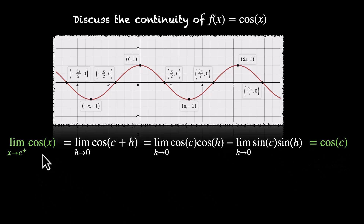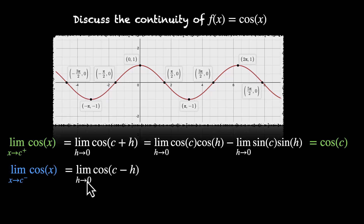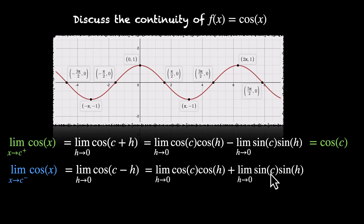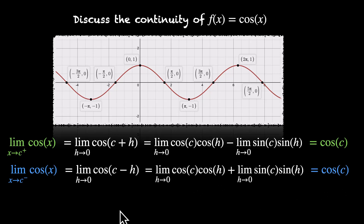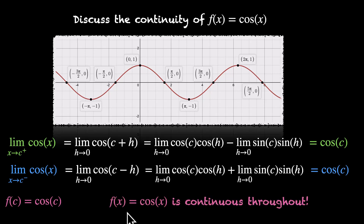The right-hand limit of cos(x) is equal to the value of the function. For the left-hand limit: limit x→c⁻ of cos(x) = limit h→0 of cos(c − h). Applying cos(a − b) = cos(a)cos(b) + sin(a)sin(b) and evaluating the limits gives cos(c) · 1 + 0 = cos(c). So the left-hand limit equals the right-hand limit equals the value of the function, which means cos(x) is continuous throughout its domain.